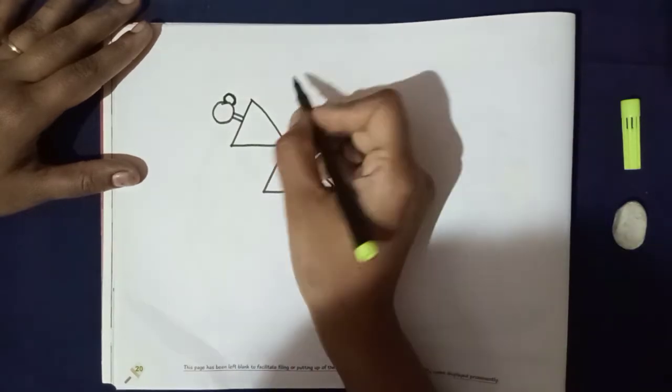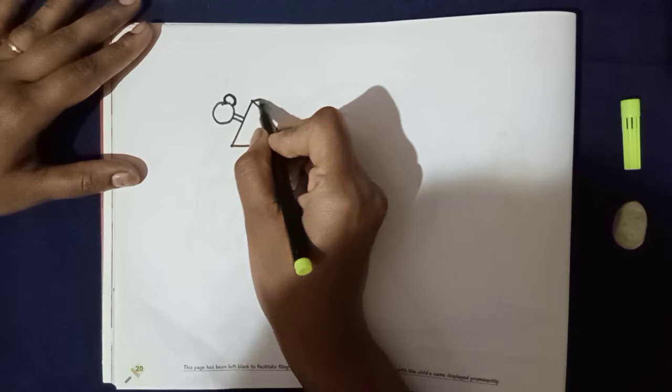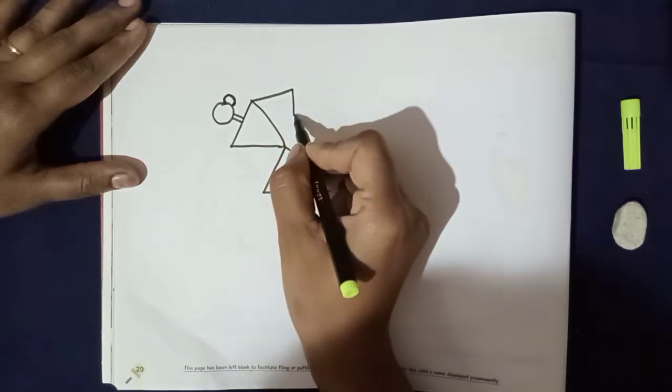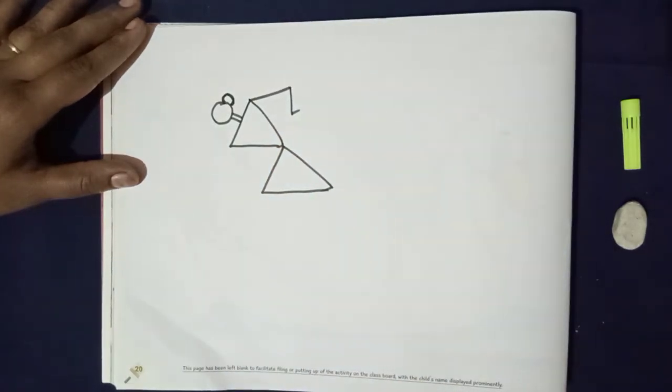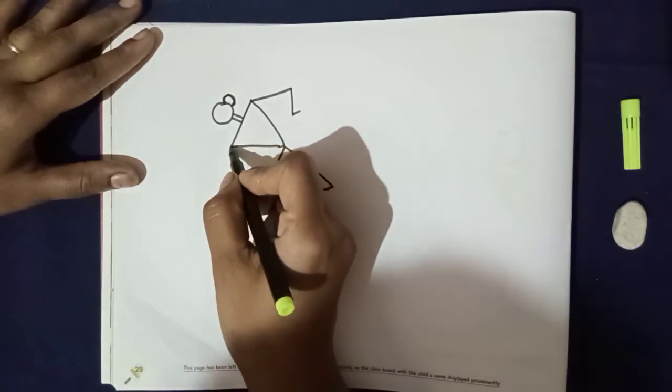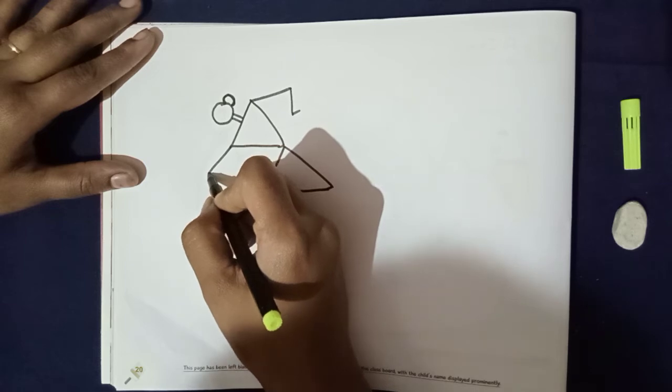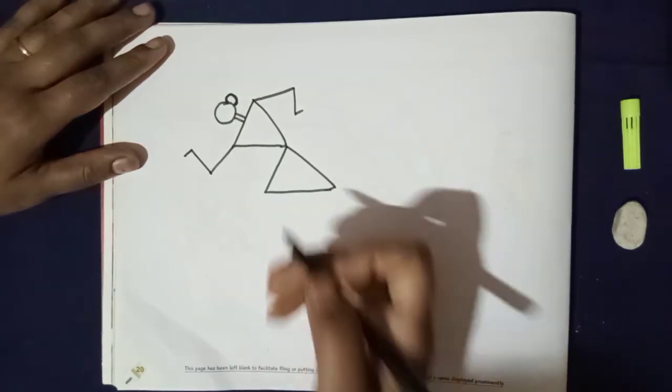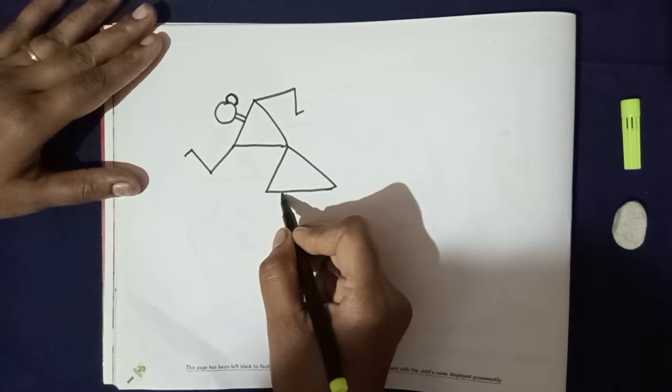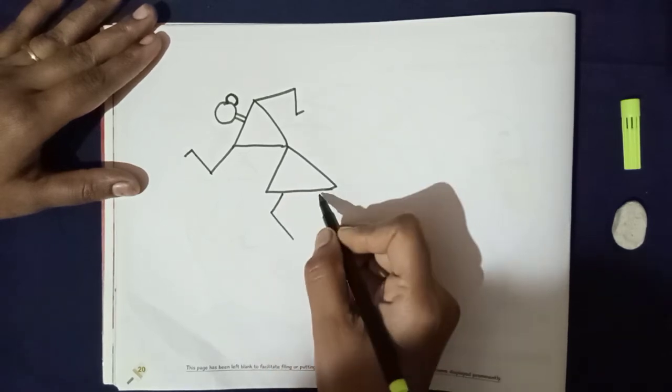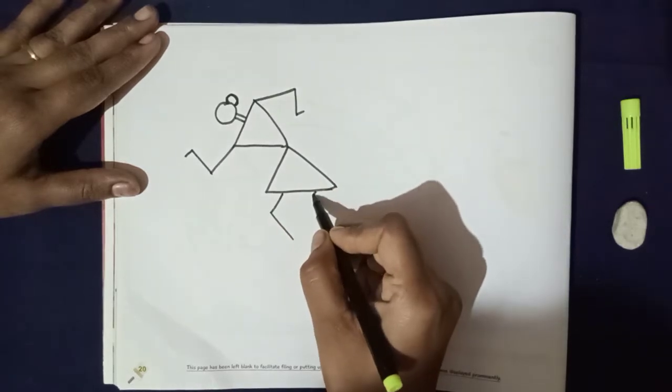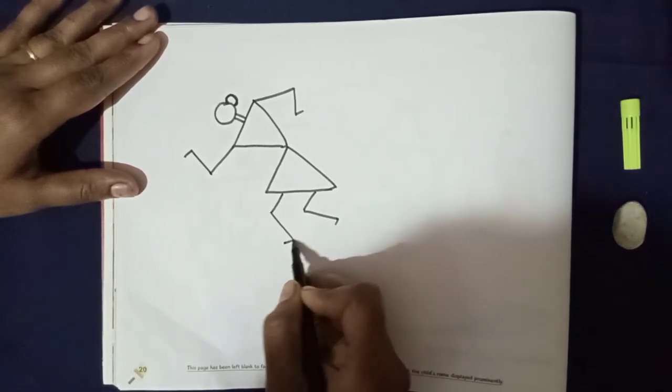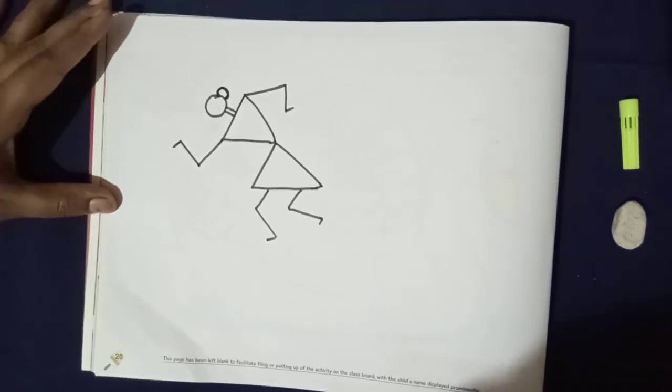And from this triangle corner, we will draw one slanting line, and one standing line, and one sleeping line. And from this corner, we will draw one slanting line. Again, and like this. And here also we will draw two slanting lines. One, two. One, two. Okay, like this. See children.